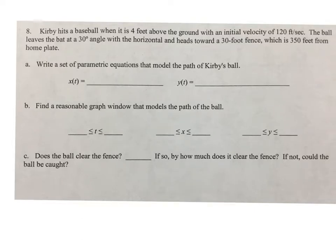In this parametric equation problem, Kirby hits a baseball four feet above the ground with some initial velocity at a specific angle. From this information, we can determine this is a projectile motion, parabolic problem.